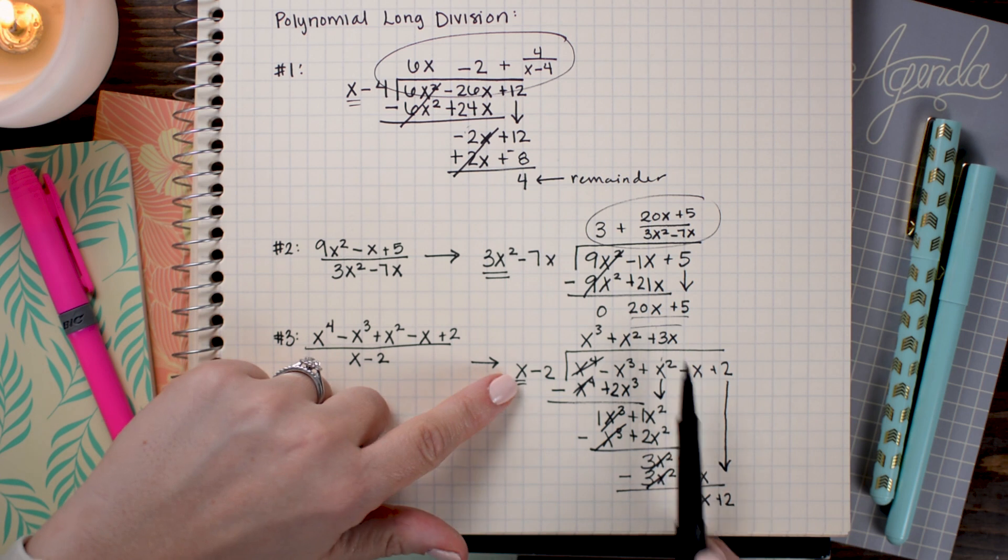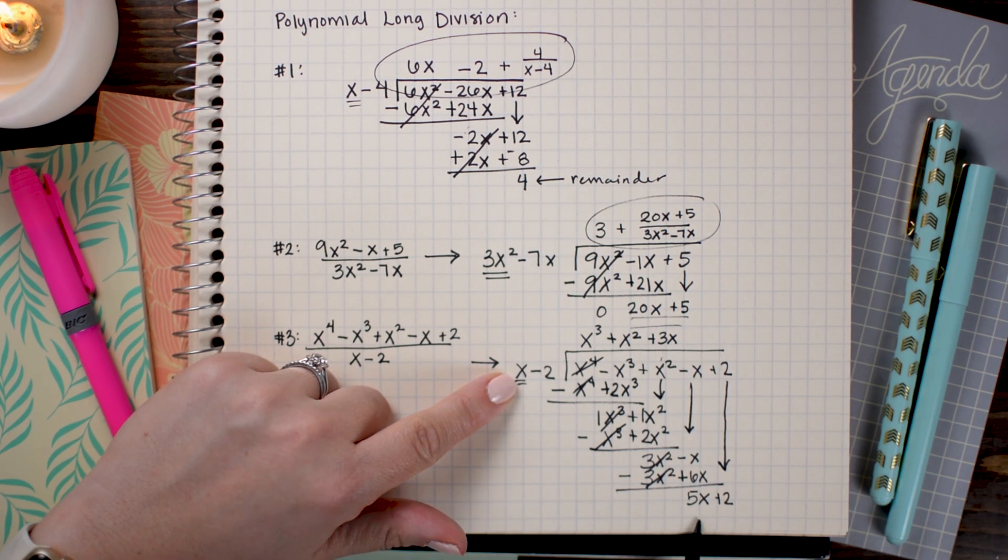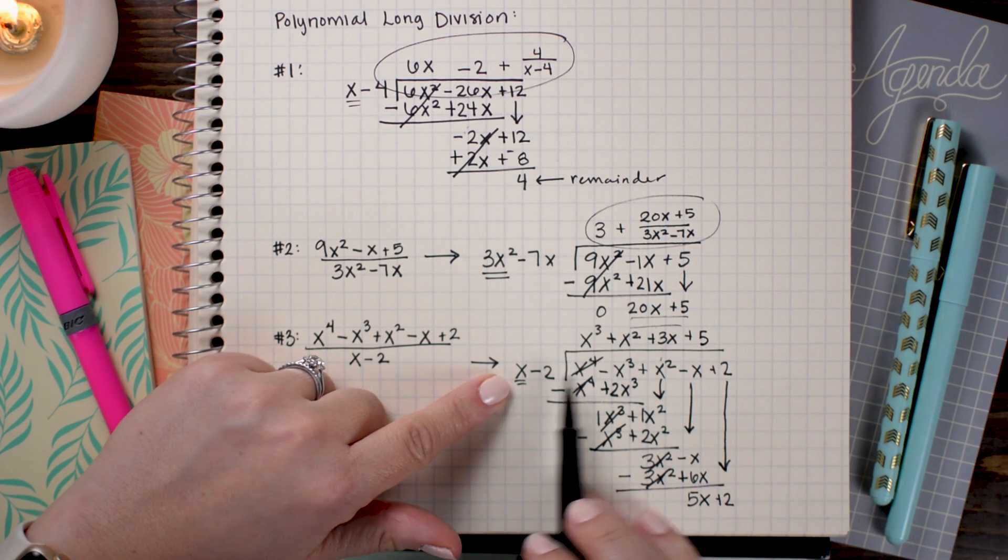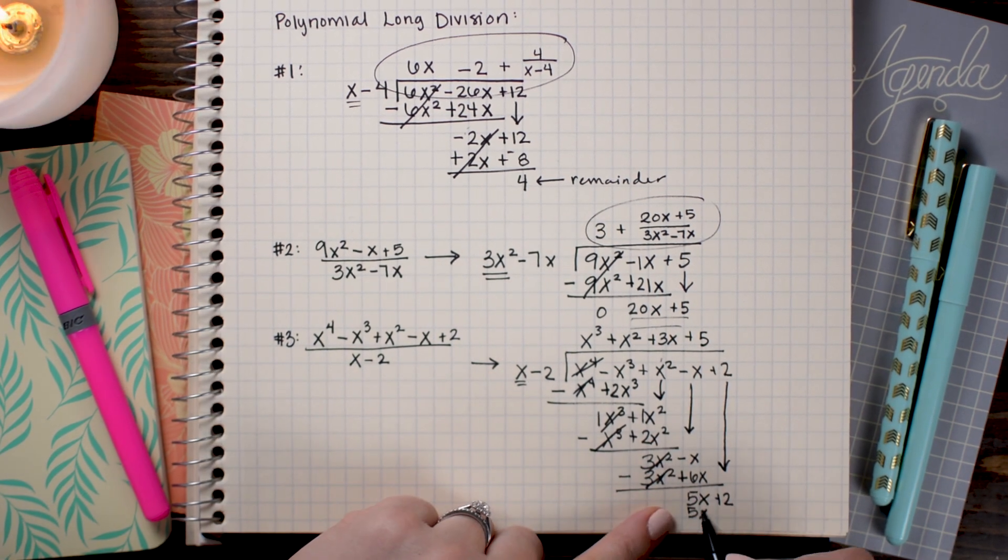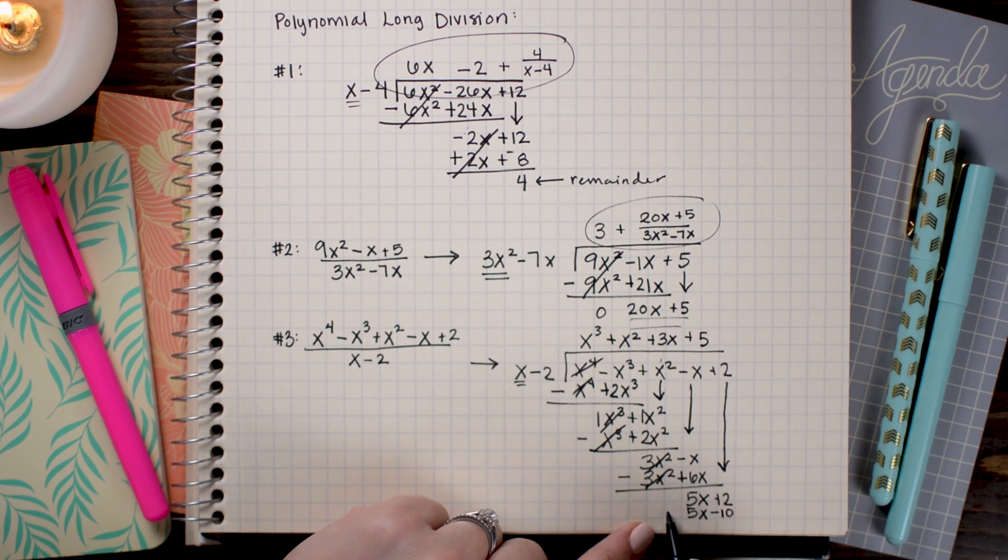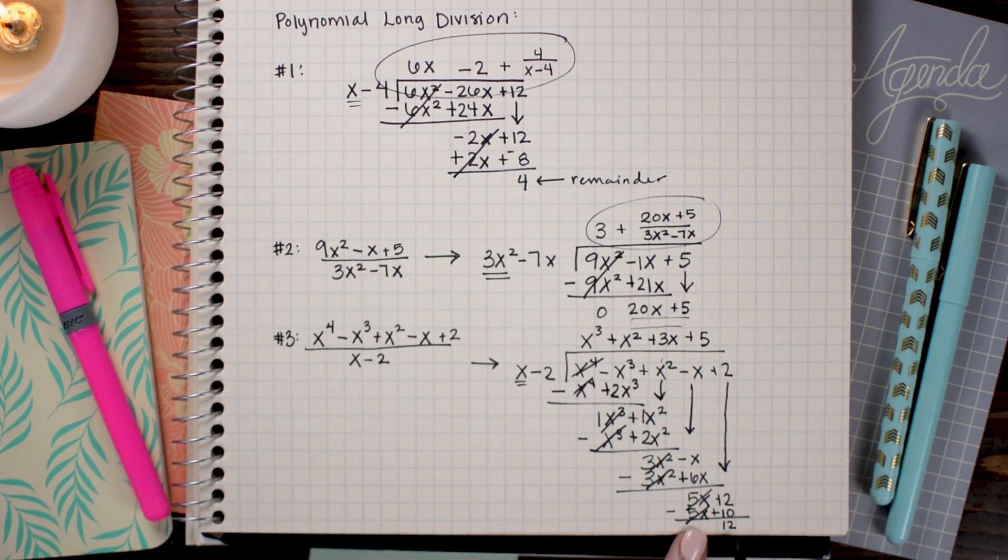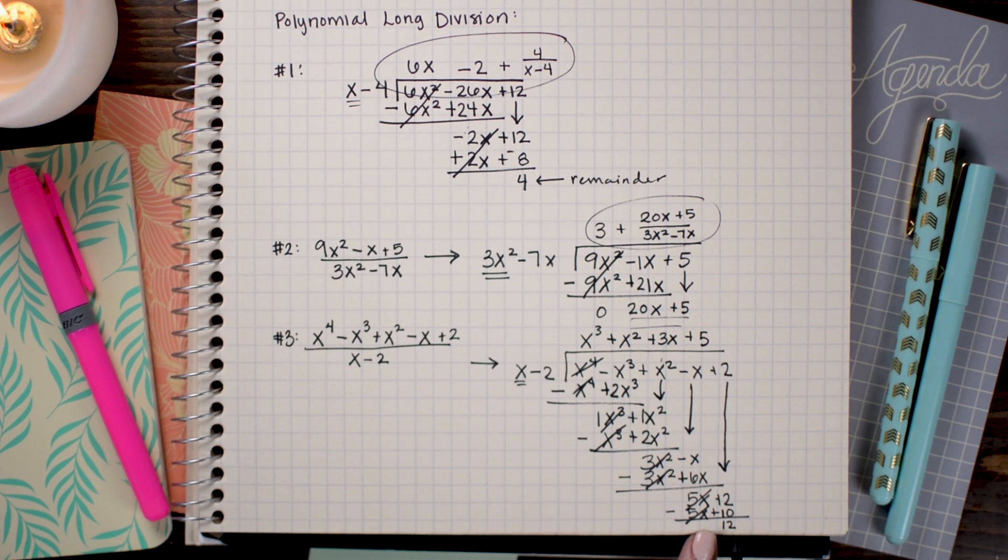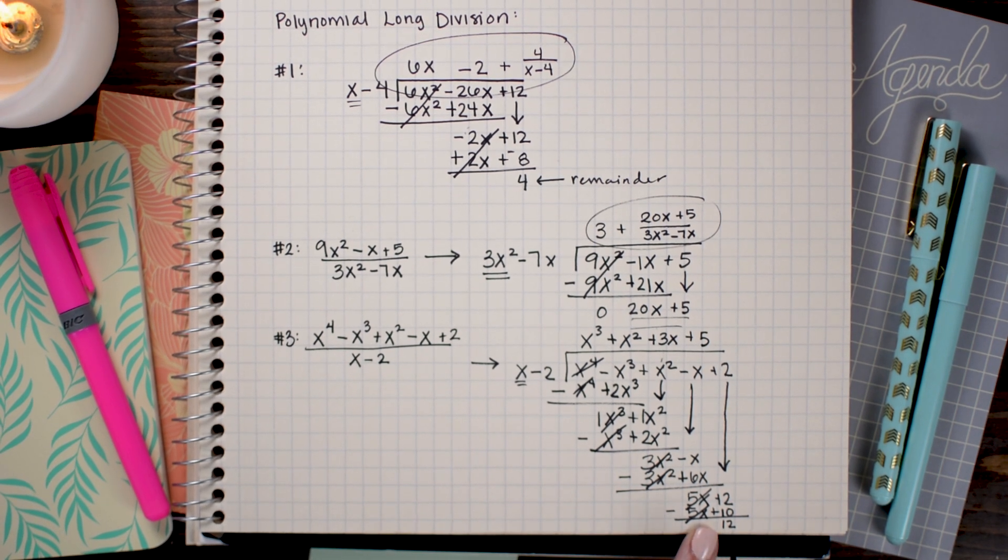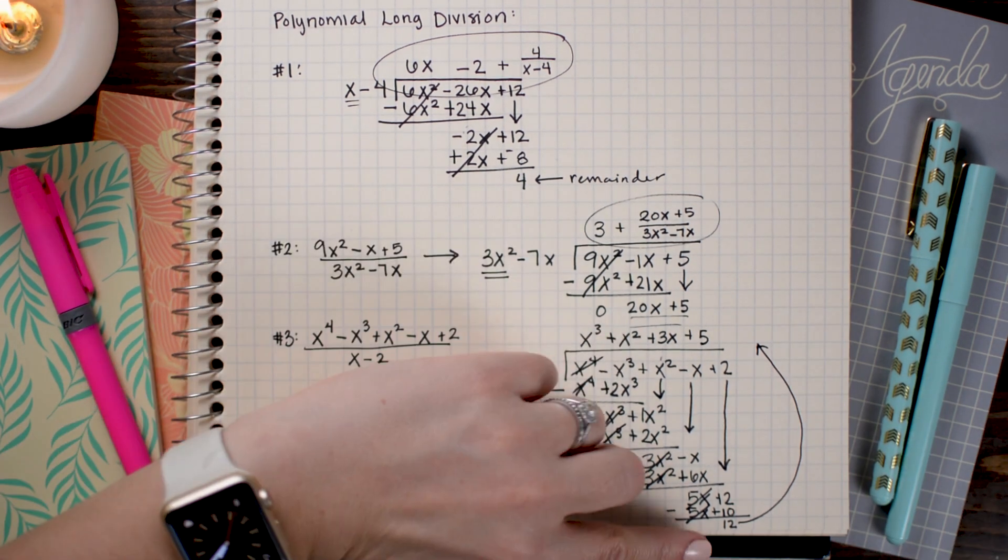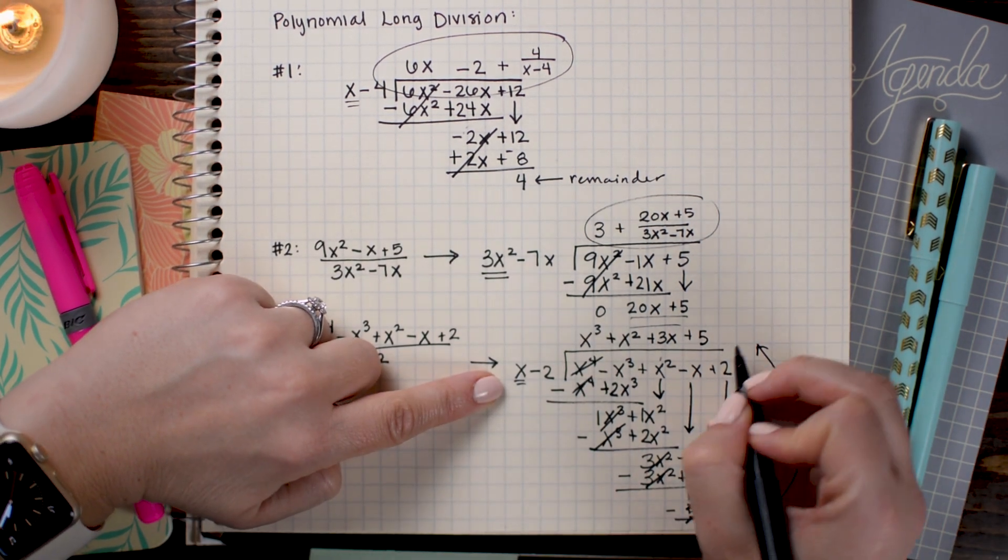I'm going to bring down the last term which is +2. What times x gives me 5x? Well, that would be positive 5. So I'm going to write +5 up here and multiply it through. And really tiny here because I'm running out of space. I get 2 + 10 is 12 and that is going to be my remainder. So I'm going to write that as +12 over (x - 2).